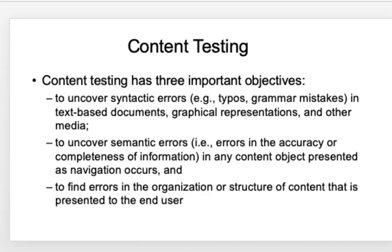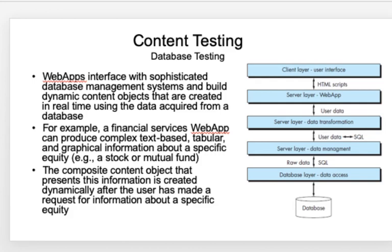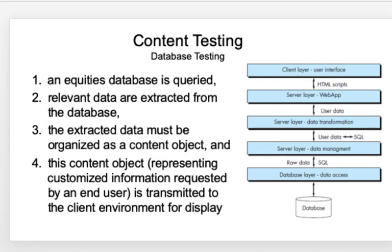Content testing uncovers syntactic errors like typos or grammar mistakes, semantic errors dealing with the meaning of information, and errors in the organization or structure of content presented to the end user. One kind of content testing is database testing. Web app interfaces built with sophisticated DBMS create dynamic objects and acquire data from a database — for example, in a stock market equities database, relevant data is extracted, objects are organized, and content testing is performed.